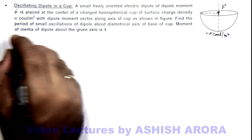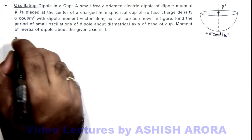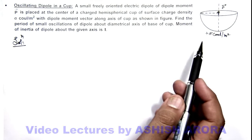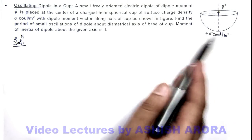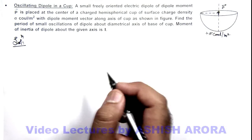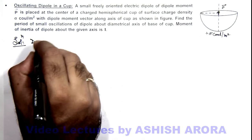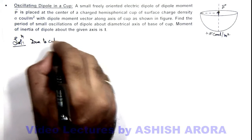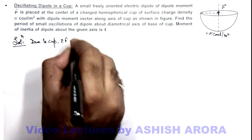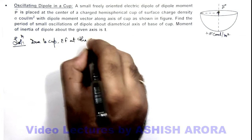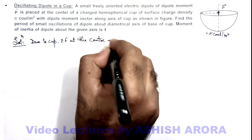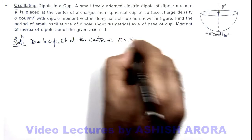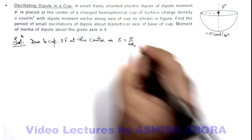In this situation, we can analyze by using the electric field due to the cup at its center, which we are already aware about. So here we can write: due to the cup, the electric field at the center is given by sigma by 4 epsilon naught.